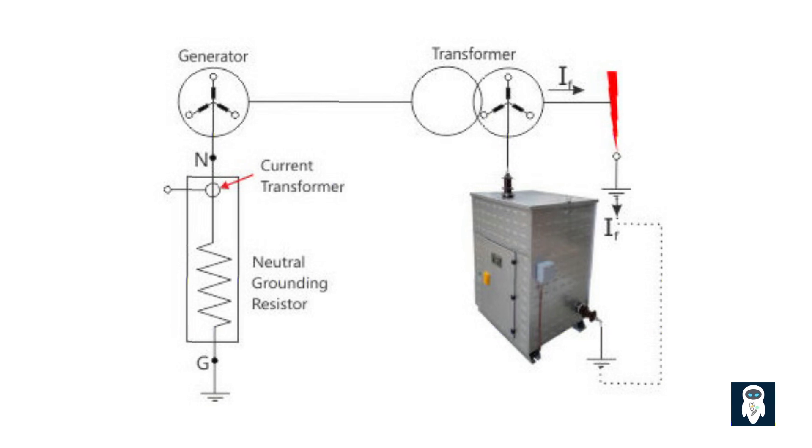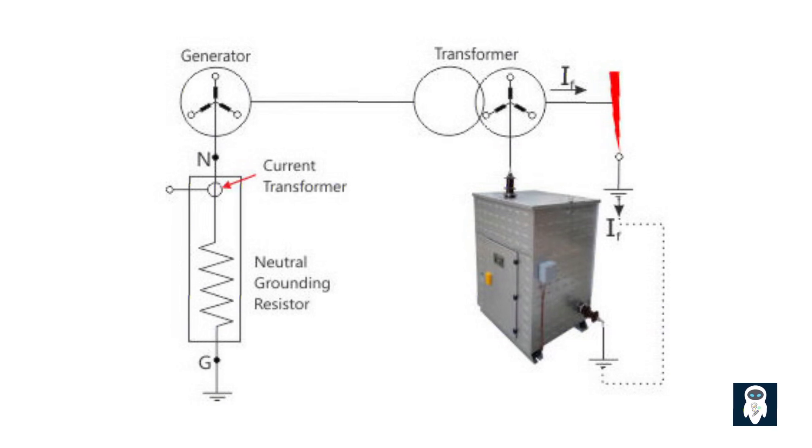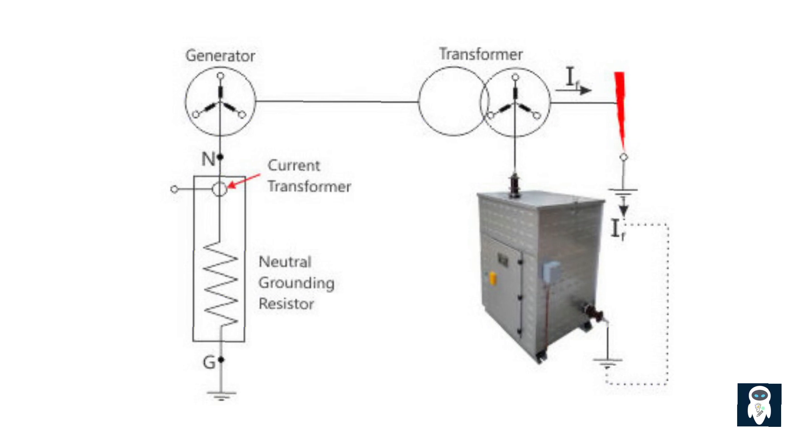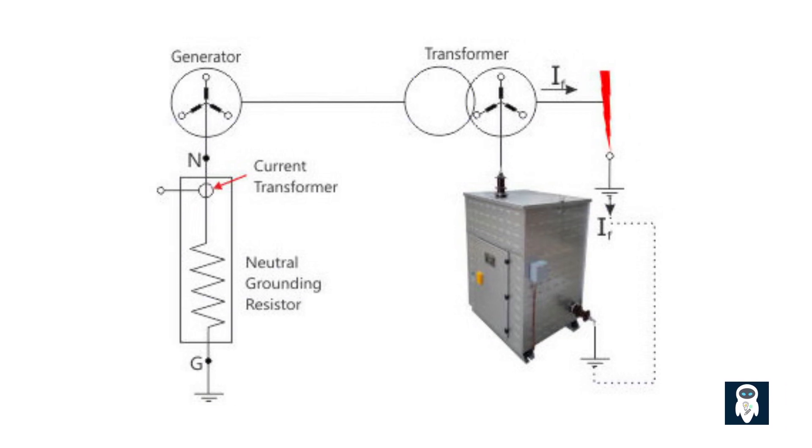The main reasons for using a neutral grounding resistor in a power transformer. We've explored how neutral grounding resistors limit fault currents, stabilize voltage, reduce transients, and aid in fault detection. These devices are vital for maintaining a safe and reliable electrical power system. We hope you found this information enlightening. If you have any more questions or topics you'd like us to cover, please let us know in the comments below. Remember, knowledge is power, and understanding the technology behind our electrical infrastructure empowers us to make informed decisions. Thank you for watching.